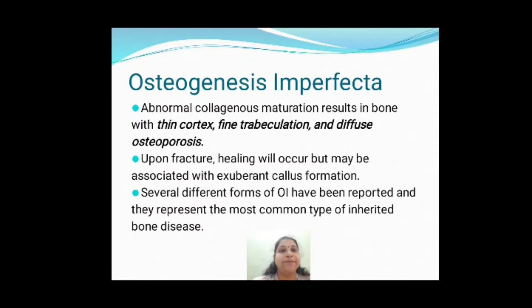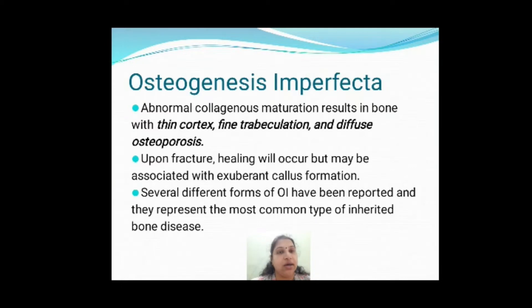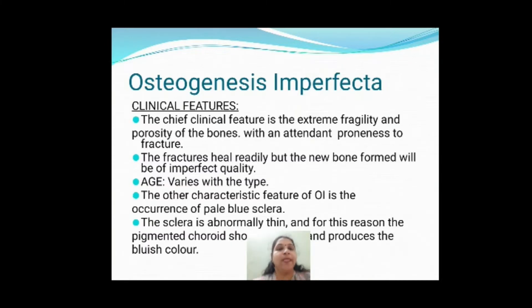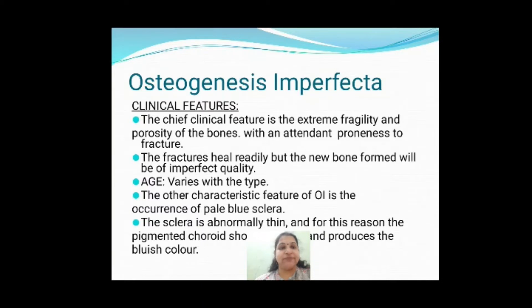Bones form but they will be very weak and very delicate, so there will be frequent fractures. Upon fracture, healing will occur but there will be exuberant callus formation. The chief clinical features seen in osteogenesis imperfecta include bone fragility.